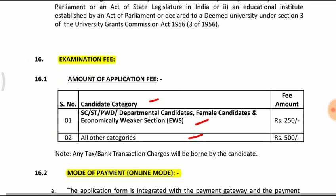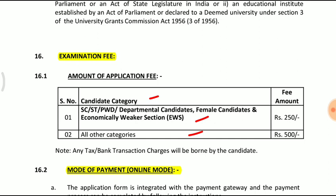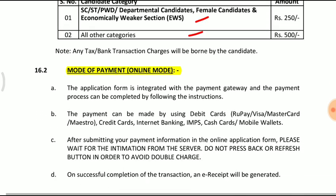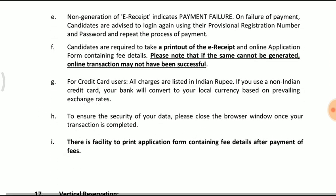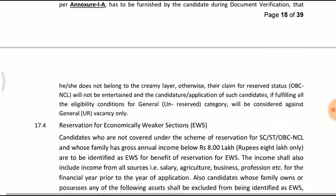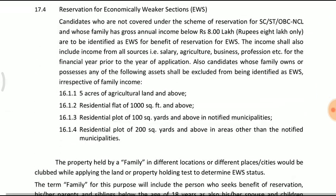Application fees: SC/ST, PwD, female candidates, departmental candidates, and EWS category pay 250 rupees. OBC and General category males pay 500 rupees. You can pay the fee online.